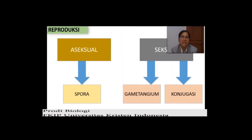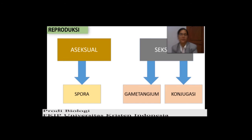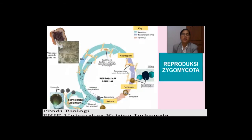Kita akan bahas tentang reproduksi dari jamur. Reproduksi dari jamur itu ada dua: aseksual dan seksual. Aseksual itu melalui spora. Kemudian kalau seksual, dia dari gametangium dan konjugasi. Kita akan bahas.